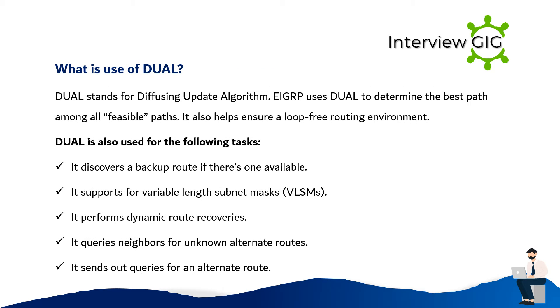What is the use of DUAL? DUAL stands for Diffusing Update Algorithm. EIGRP uses DUAL to determine the best path among all feasible paths. It also helps ensure a loop-free routing environment.